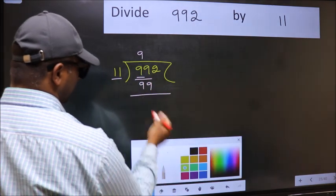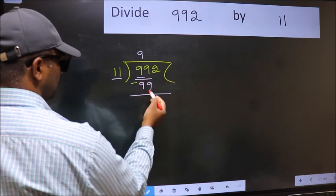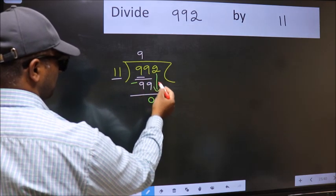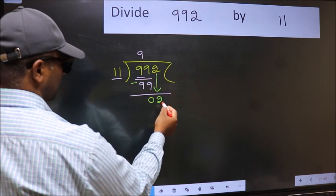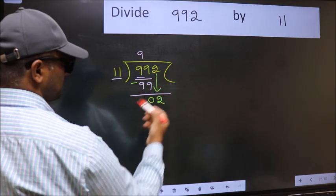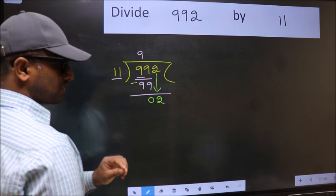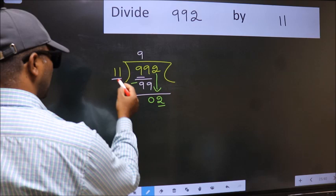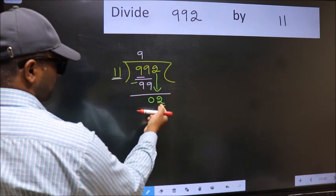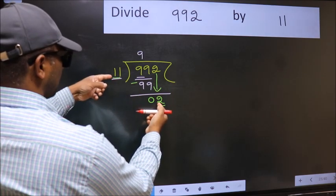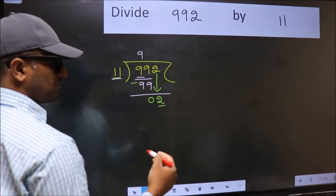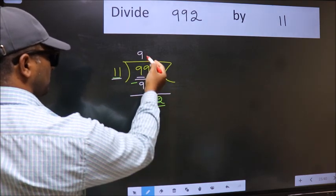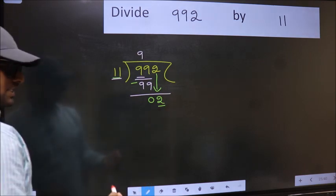Now subtract. 99 minus 99 equals 0. After this, bring down the next number, so 2 comes down. After this step, the mistake happens. The mistake is this: here we have 2 and here 11. 2 is smaller than 11, so what many do is directly put a dot and take 0, which is wrong.